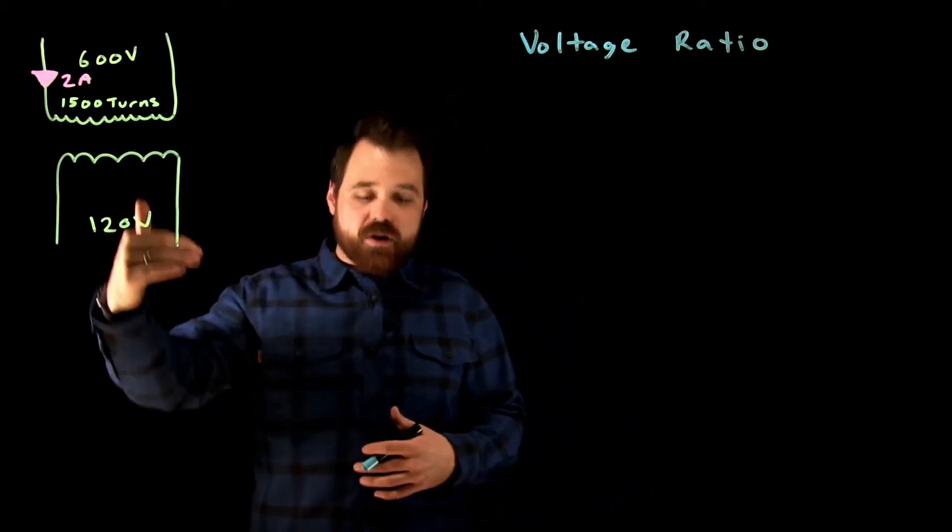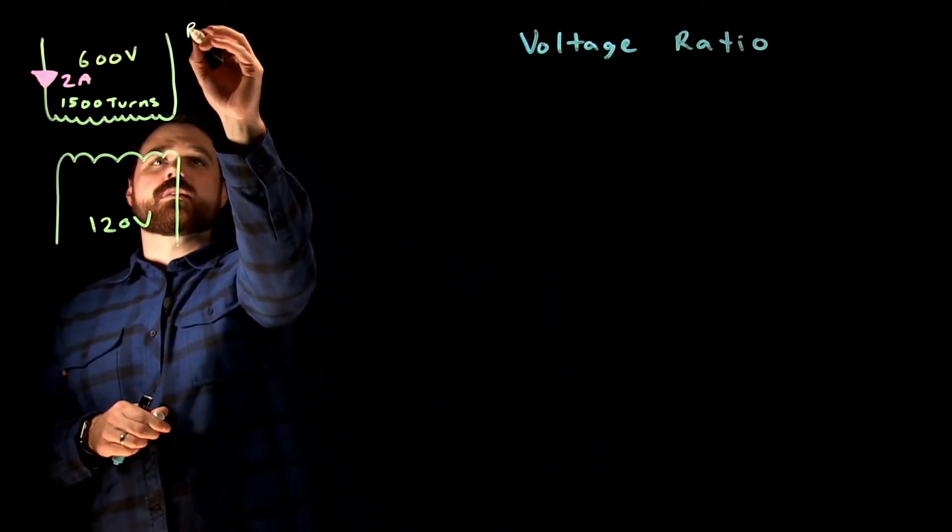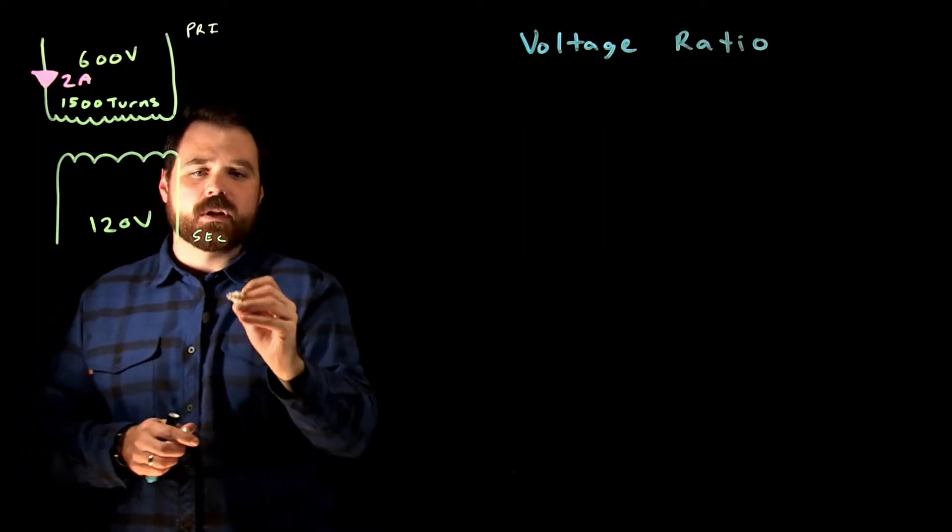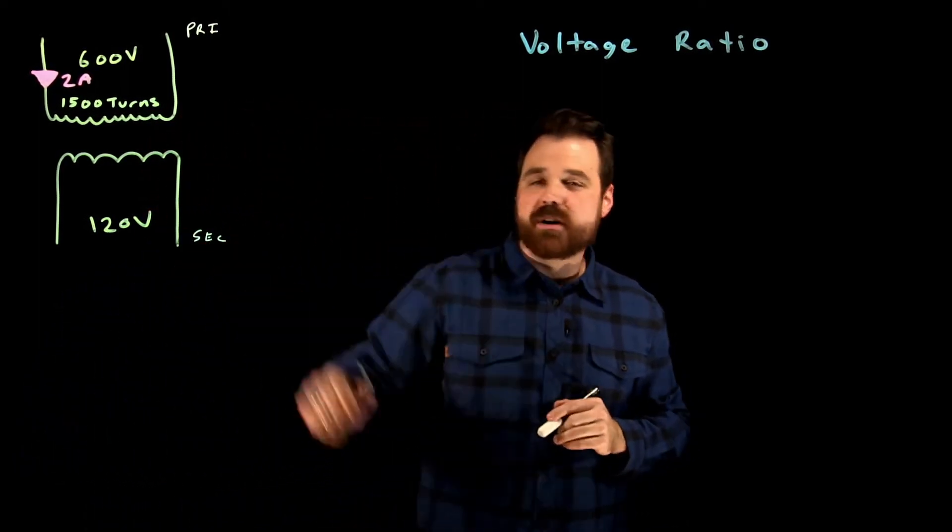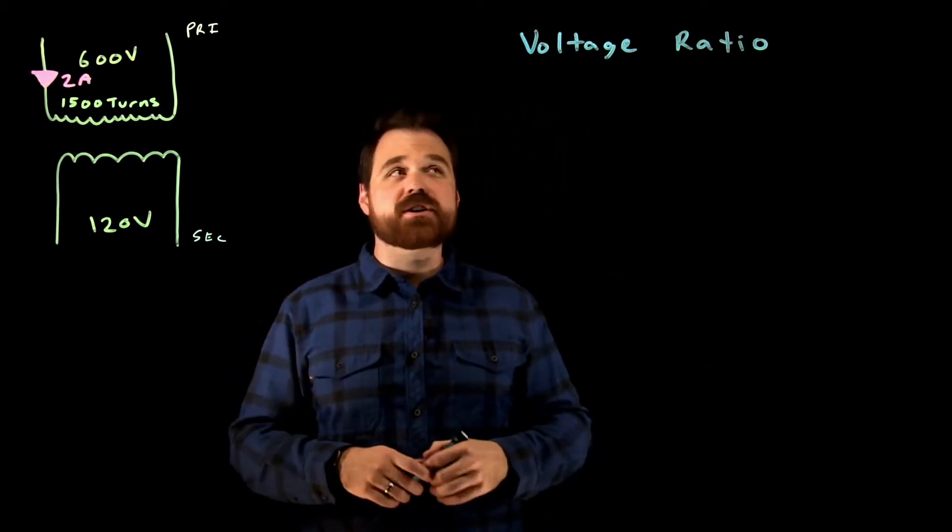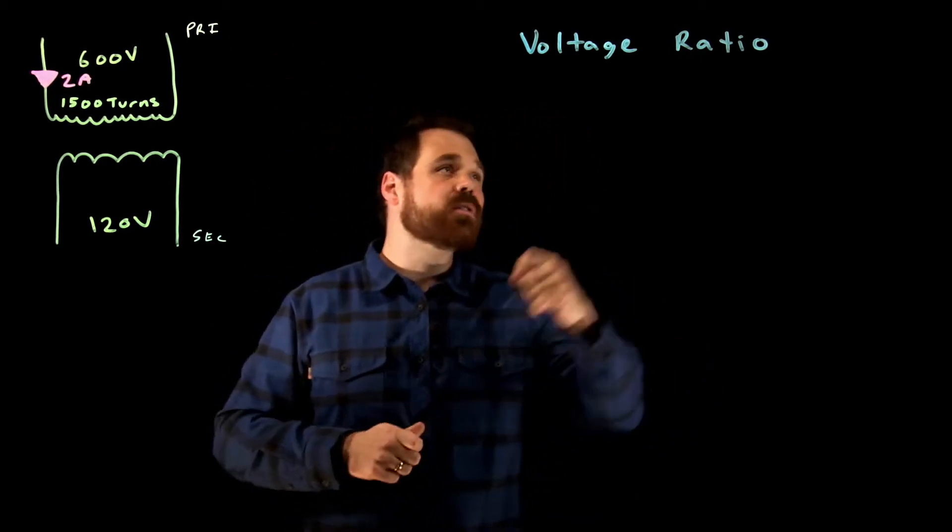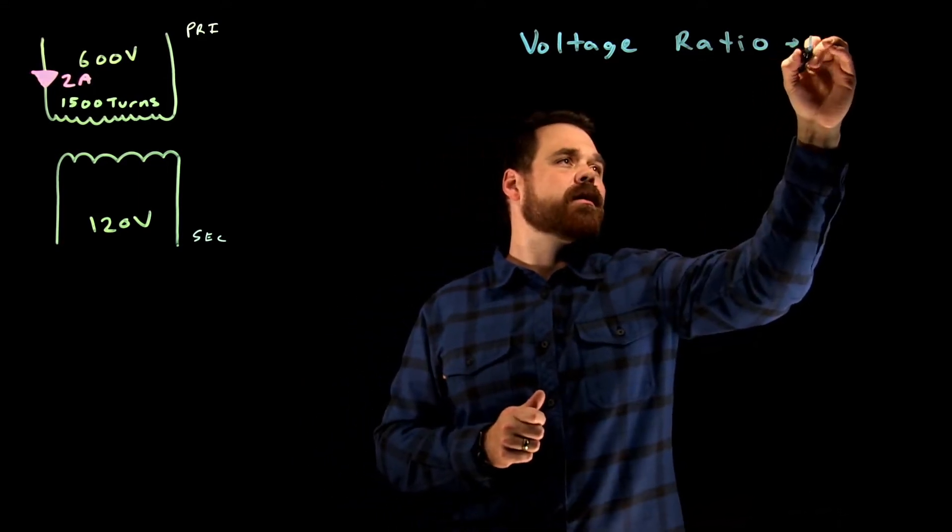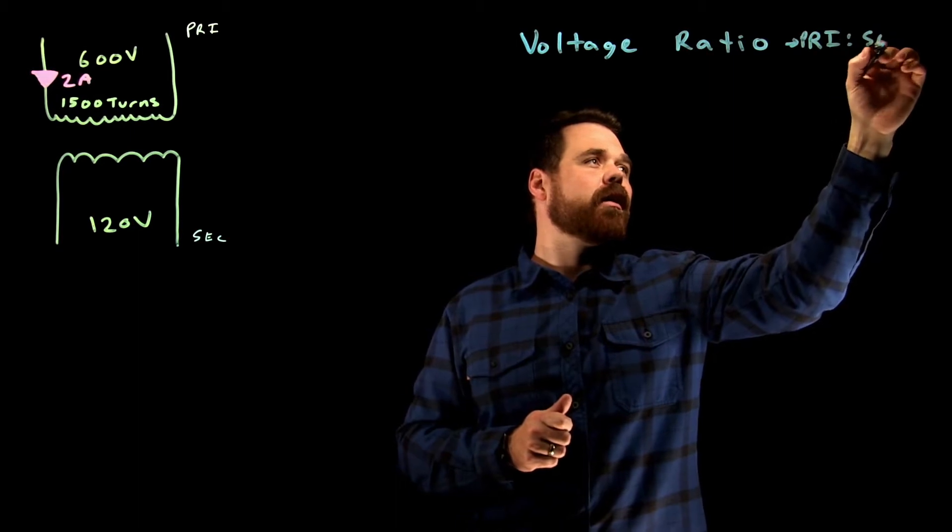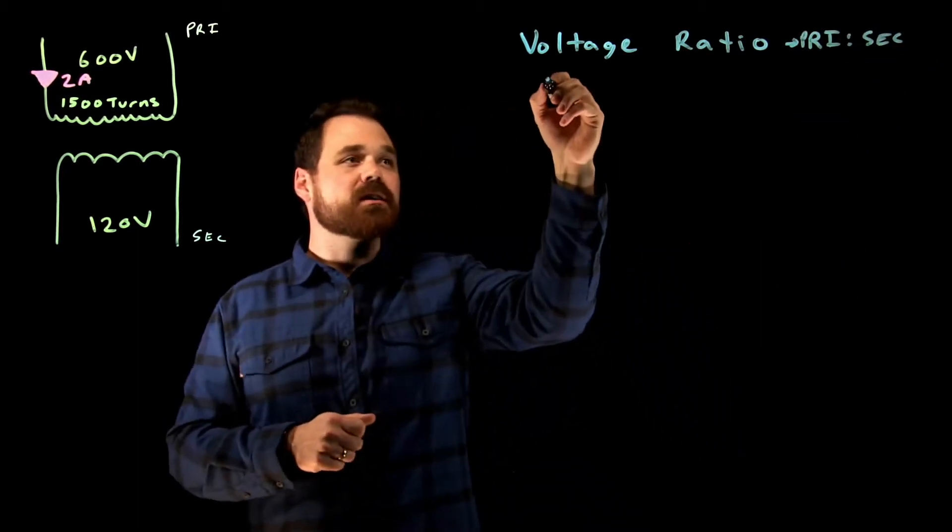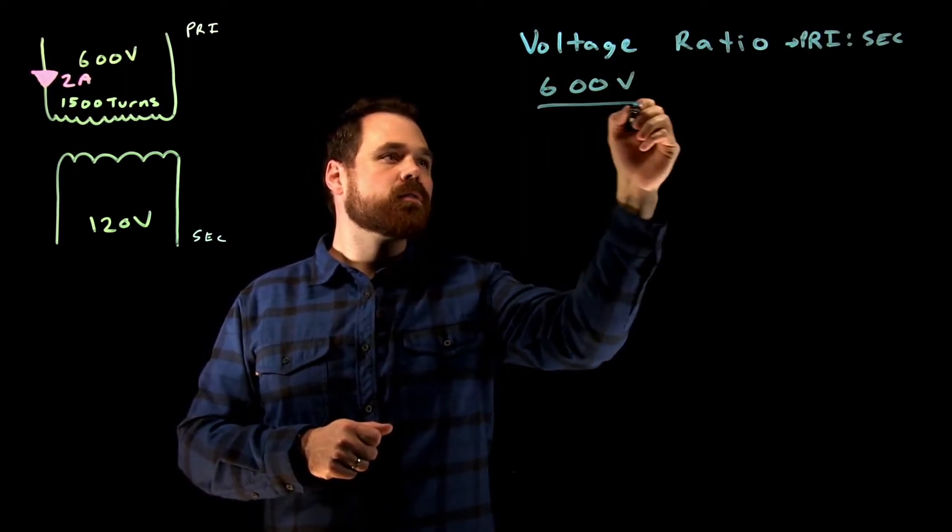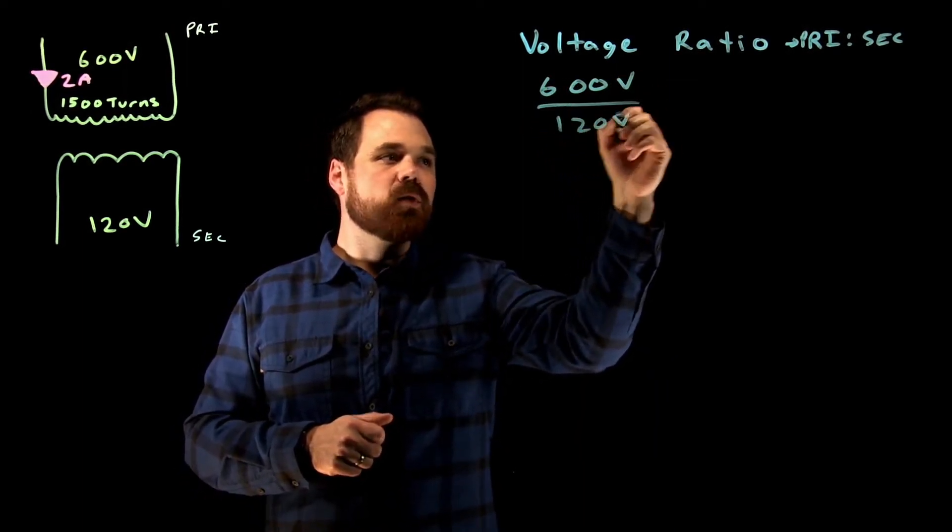On the secondary of that transformer, so up here we have the primary and down here we have the secondary. The secondary of the transformer is 120 volts. So in this transformer, our voltage ratio, primary to secondary, which is what we always do, is going to be 600 volts to 120 volts.